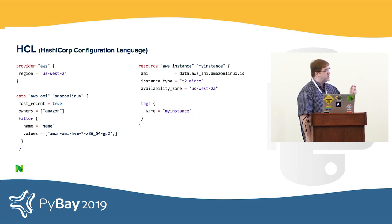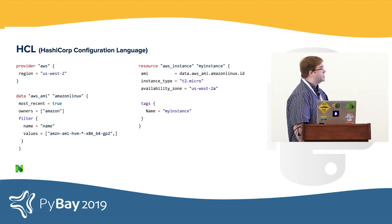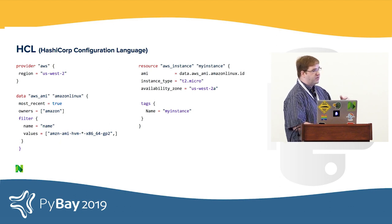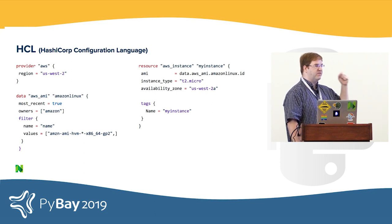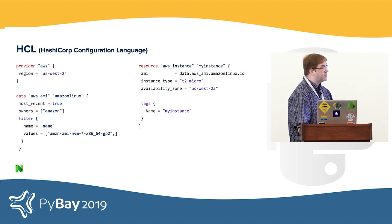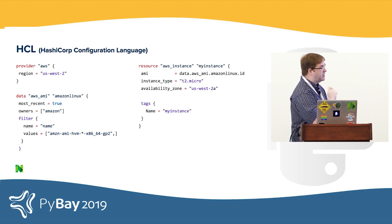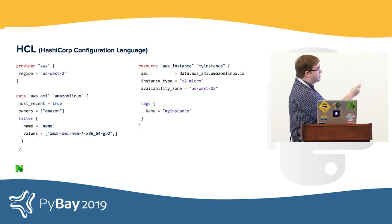I want to talk about the Terraform syntax a little bit to give context on what we try to reproduce. Here's a pretty basic example. You can see we're declaring several different types of configurations. One is a provider that just says we're using AWS. The data element actually goes and looks up an ID dynamically that you don't know already — it's not creating infrastructure, just a way to look up existing infrastructure. And then the resource is the most interesting part — that's where we're declaring an instance we're going to create. It's going to be a T2 micro instance, using the Amazon machine image looked up by the data element.